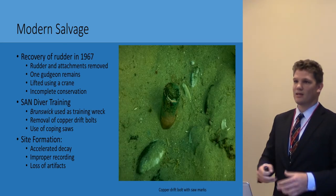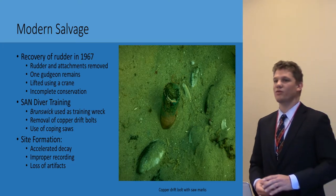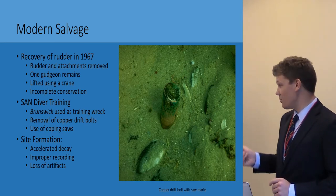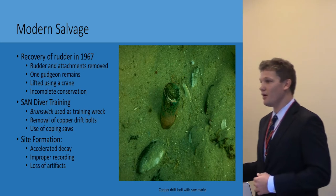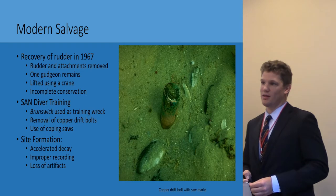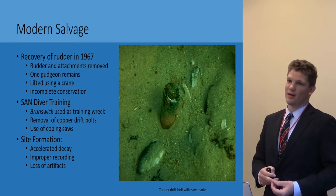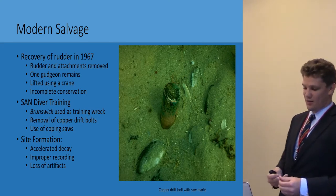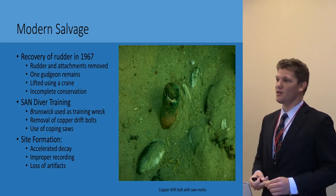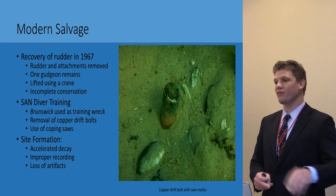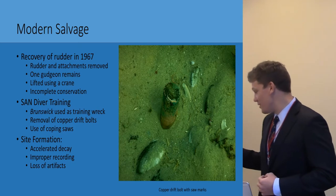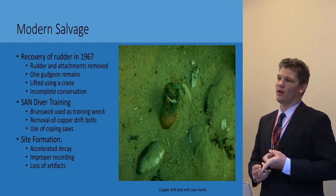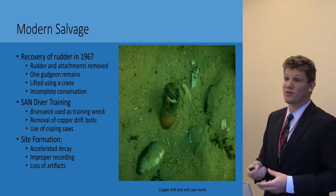The South African Navy maintains a base in Simons Bay — it is also the headquarters for the South African Naval Diving Unit. They have undertaken training dives in the area, and Brunswick has suffered as a result. Brunswick was used as a training wreck, and the copper bolts that Nathan talked about earlier have actually been removed. These bolts used to stick up to about 60 centimeters up from the seafloor. Navy divers thought this was a perfect opportunity to practice salvage work and decided to remove them using coping saws. You can see saw marks on the top of this bolt — it is perfectly flat on top. The evidence also exists in personal communication with project members. This took place during Project Sandalwood, and they found a pile of 20 to 30 broken saw blades next to these bolts. What this means for site formation is accelerated decay as there was re-exposure of the wreck, improper recording upon the removal of artifacts, and a loss of artifacts — we have no idea where these bolts are, and the Navy doesn't either.